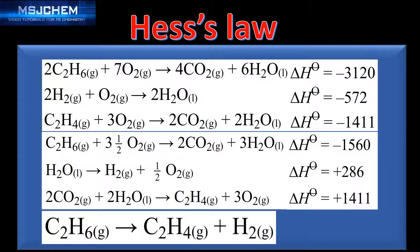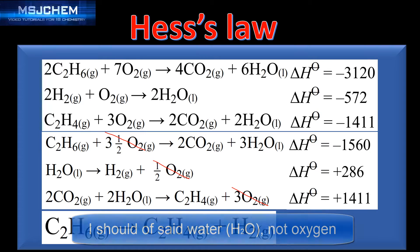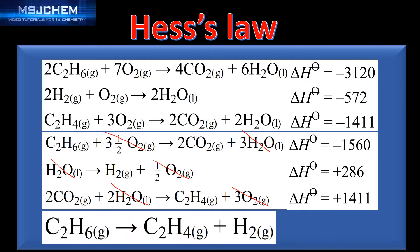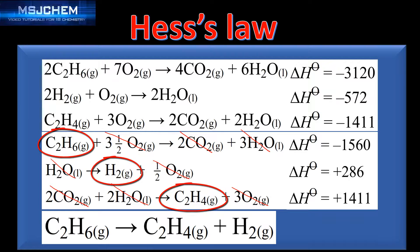Next we cancel out all the species that appear on opposite sides of the arrow. Starting with oxygen: three and a half moles cancel with the half mole and three moles of oxygen. Then the water: three moles cancel with one mole and two moles of water. Finally, two moles of carbon dioxide cancel with two moles of carbon dioxide. As a final check, we're left with one mole of ethane, one mole of hydrogen, and one mole of ethene, which matches our final equation.